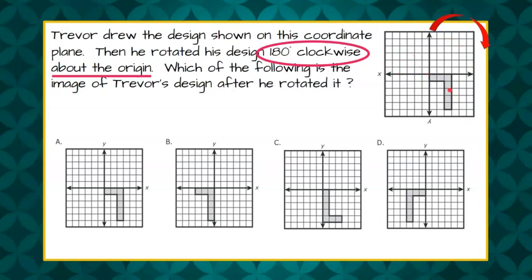So this is our rotated image, 180 degrees clockwise about the origin. We need to match our answer choices, and we can clearly see that the one it matches is A.